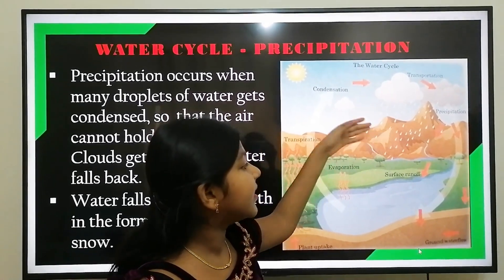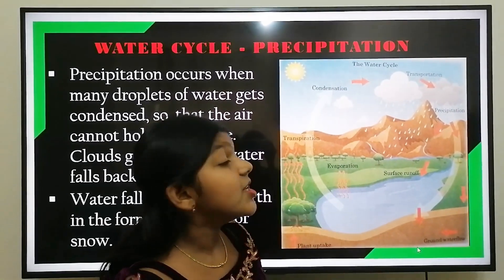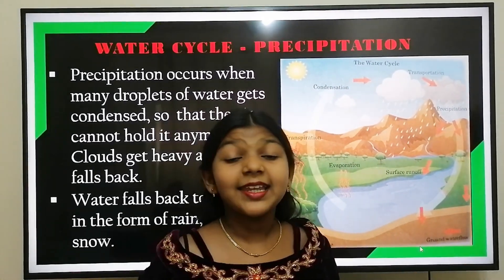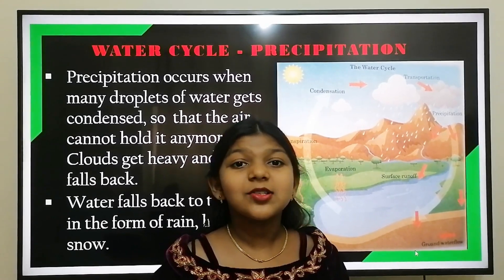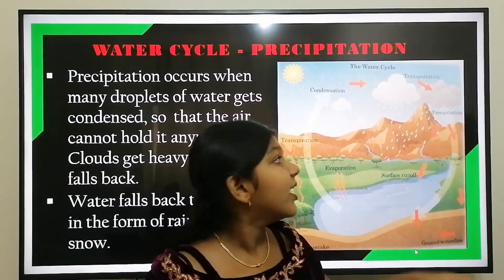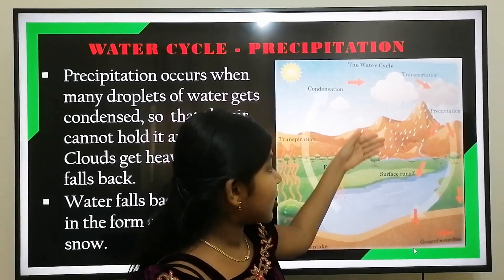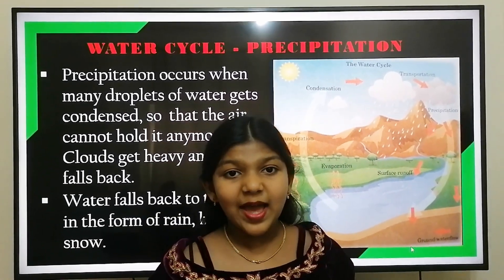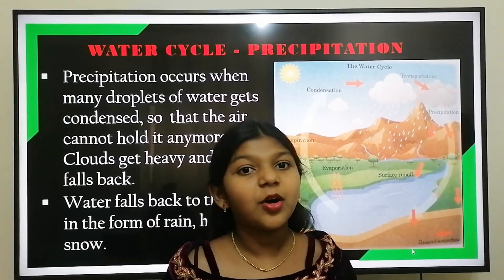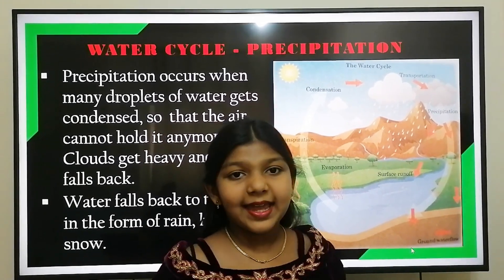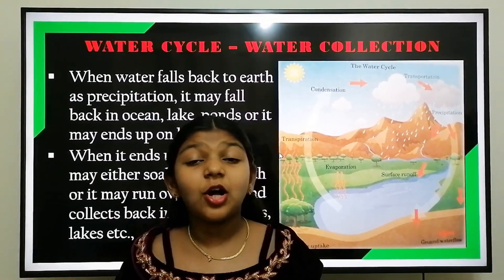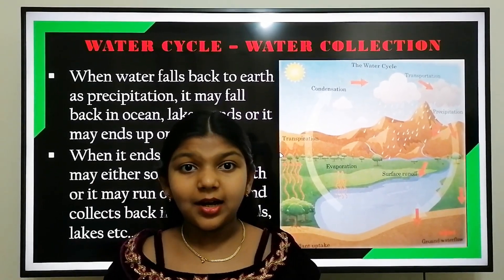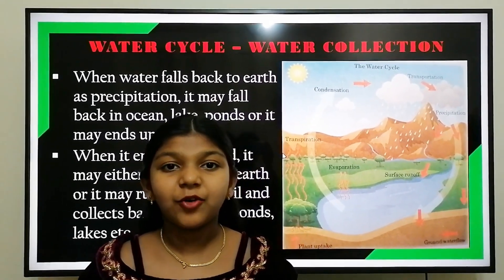Precipitation occurs when many droplets of water get condensed so that the air cannot hold them anymore. Clouds get heavy and the water falls back to earth in the form of rain, hail, or snow.